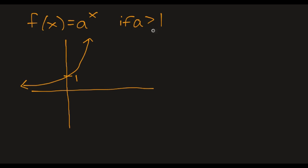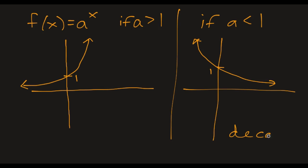If a is less than 1, remember a has to be greater than 0, though. So if a is less than 1, it models exponential decay. And it still goes through (0,1). So this is exponential decay.